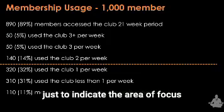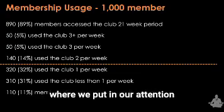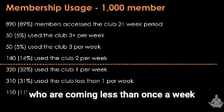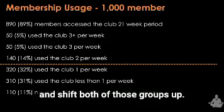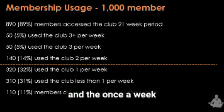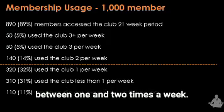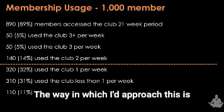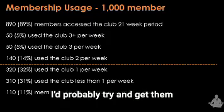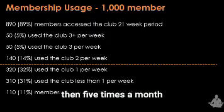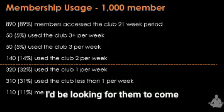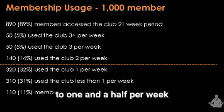I've put an orange line in there just to indicate the area of focus where we're putting our attention — those people who are coming less than once a week or once per week. We're going to try and shift both of those groups up. We want to move the less-than-once-a-week group to at least once a week, and the once-a-week group to somewhere between one and two times a week.